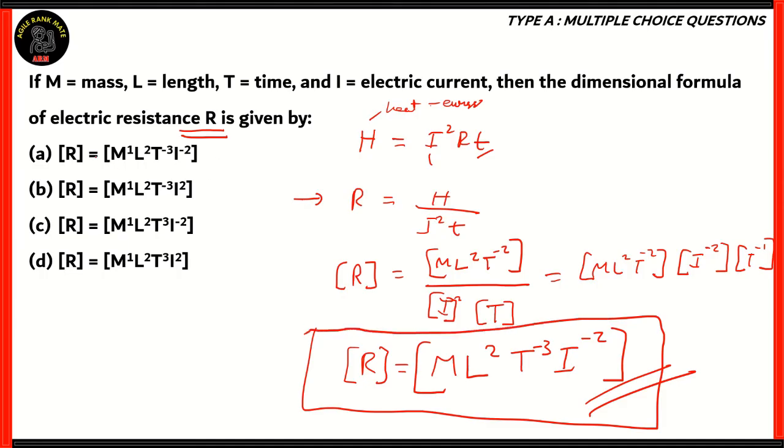So, which is that option? It is option A. So, option A is the correct option for finding out the dimensional formula of electric resistance based on mass, length, time, and electric current. All other options are incorrect, because the reason being that there is a difference when it comes to the exponents of T and I. All of these are incorrect.